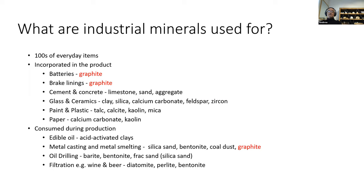On the other hand, some industrial minerals are consumed and then discarded during production. They may be used for filtration or purification purposes, such as clay used to purify edible oil like sunflower oil, or to filter wine, beer, and fruit juice. So they get used, consumed, and then discarded — very rarely recycled.